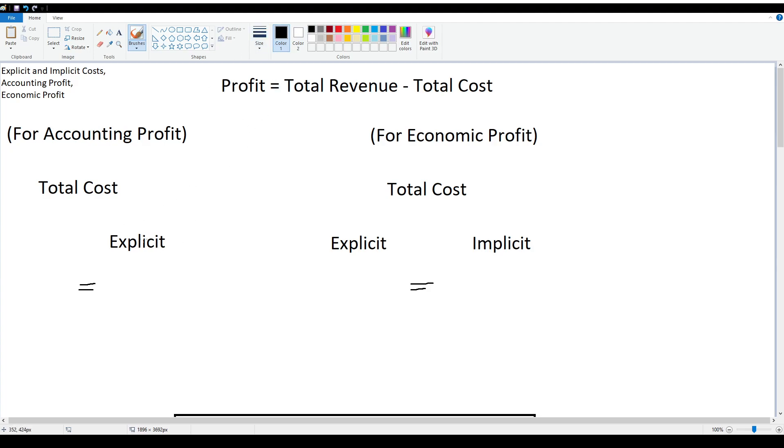So this is the formula we're going to use when it comes down to profit, whether it be economic or accounting profit: it's going to be total revenue minus the total cost.